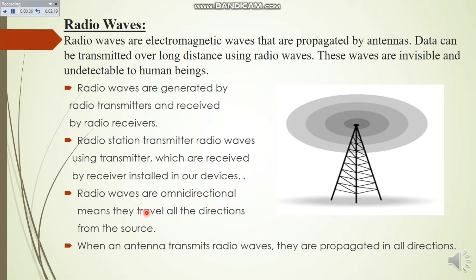Radio waves are omnidirectional, meaning they travel in all directions. When an antenna transmits radio waves, they propagate in all directions. Radio stations send radio waves with the help of a radio transmitter, and the receiver is the device which catches the signals.